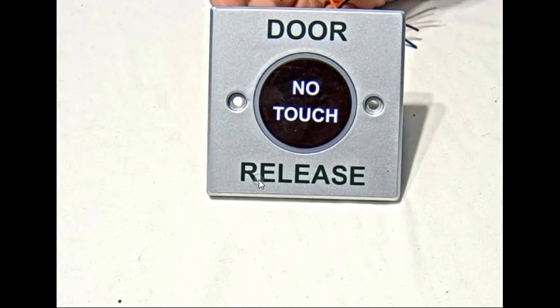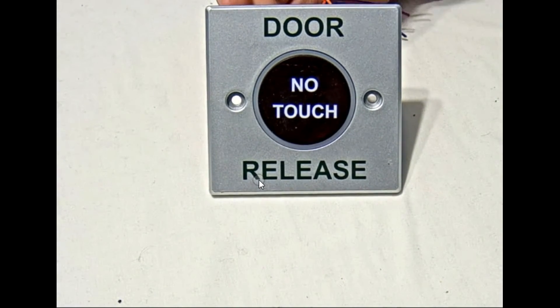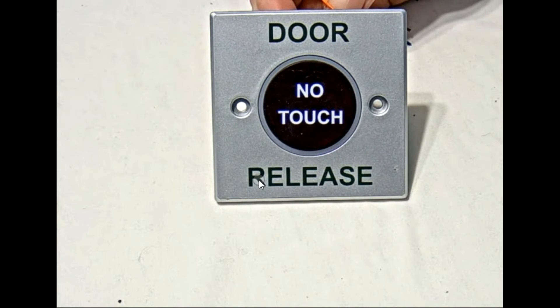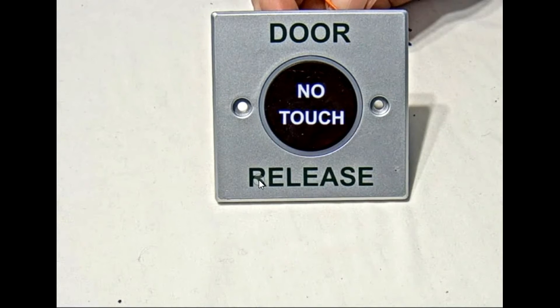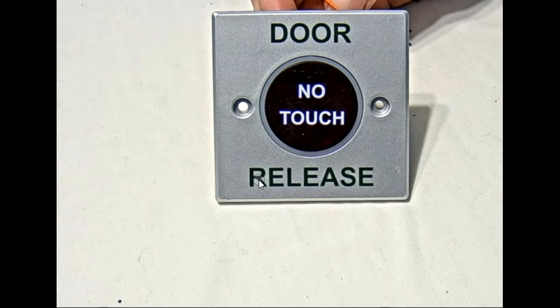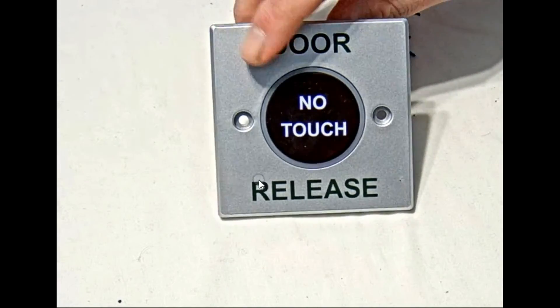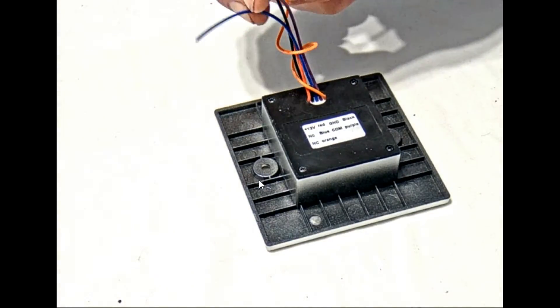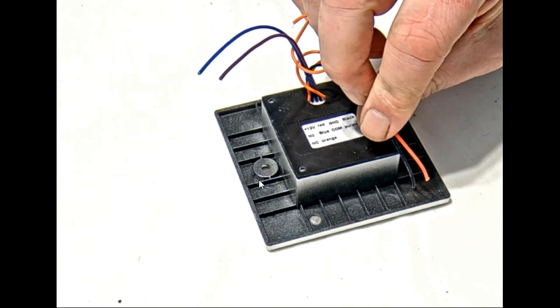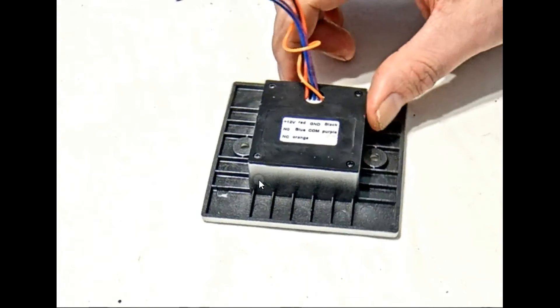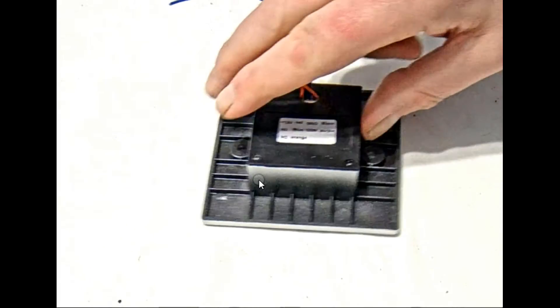Then there's the touch-free switches, such as this one here. This is from RGL, EBT slash TF-3. So exit button, no touch, touch-free version 3. With touch-free buttons, they do need powering. There's a separate power connector, the POS and NEG. But as you can see, the output's common, normally open and normally closed. So an open switch.